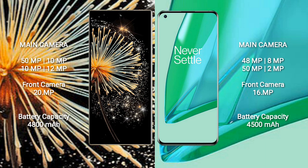The OnePlus 9 Pro also features a rear quad camera setup with 48MP, 8MP, 50MP, and 2MP lenses, along with a 16MP front camera.